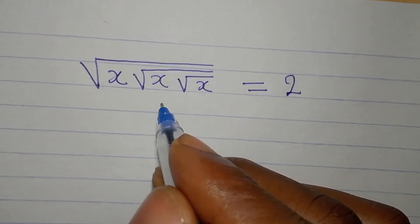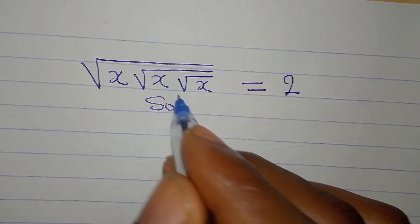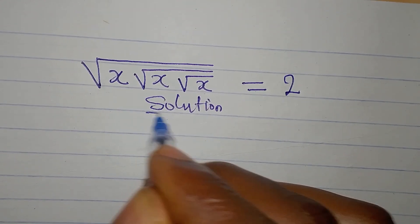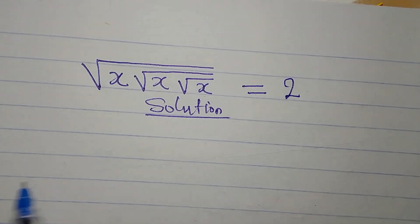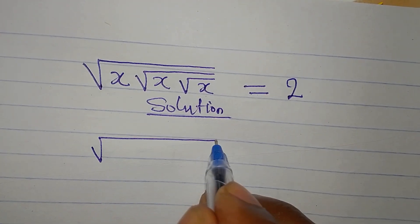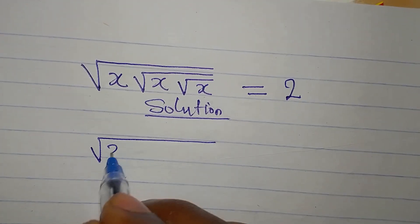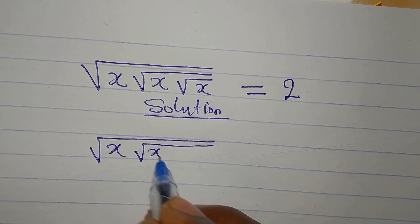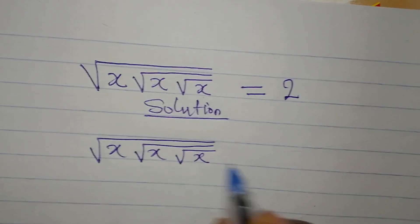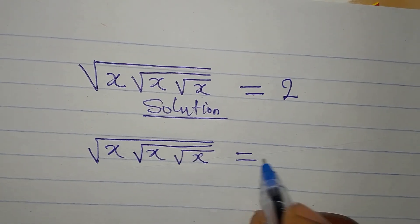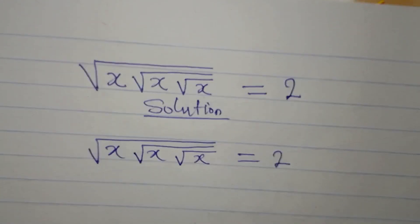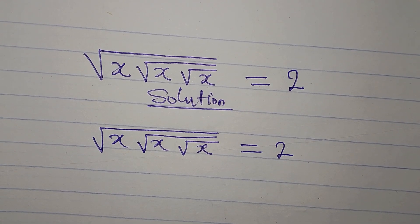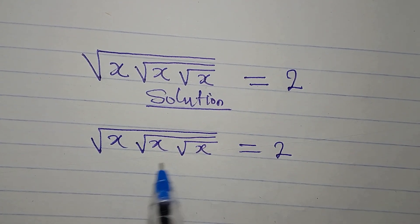Hi everyone, let's look at the two ways this equation can be solved. We have square root of x, times square root of x, times square root of x, equals 2. Let's use the first method.